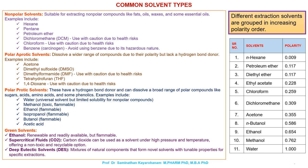Polar aprotic solvents dissolve a wider range of compounds due to their polarity but lack a hydrogen bond donor. Examples include acetone, dimethyl sulfoxide (DMSO), and dimethylformamide (DMF). Use DMF with caution due to health risks.